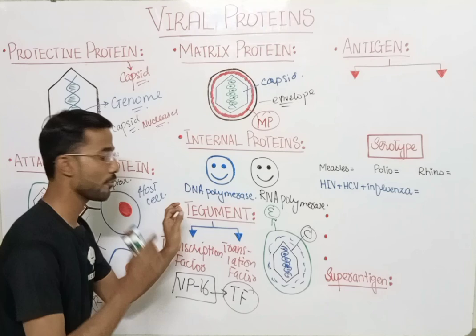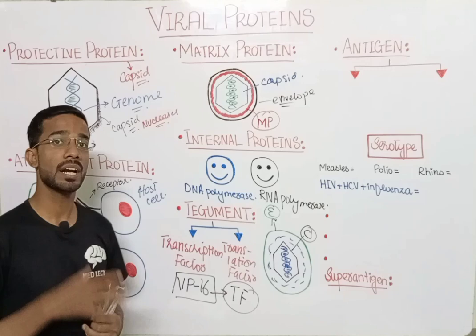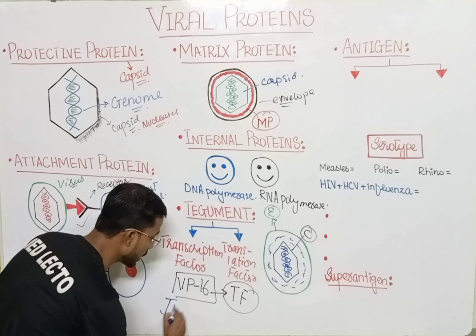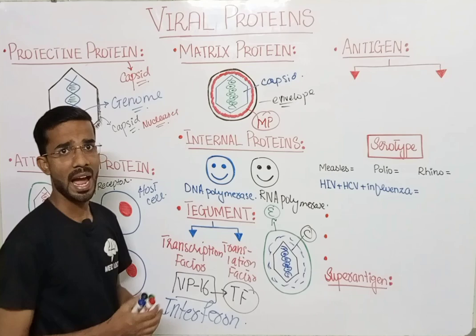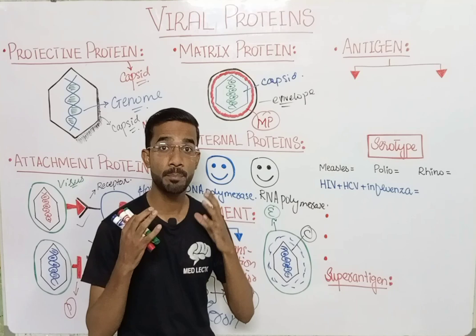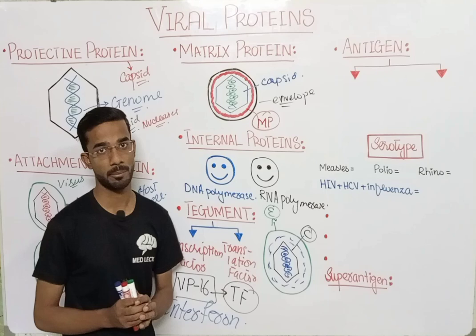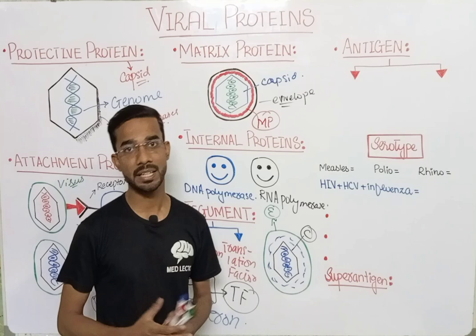One important function of the tegument is the replication of viruses. Additionally, different teguments are involved in the protection of the virus. In our body, interferon is produced by white blood cells to prevent infection from bacteria and viruses. But the tegument actually prevents the production of interferon in our body, and that is why the virus can easily replicate.